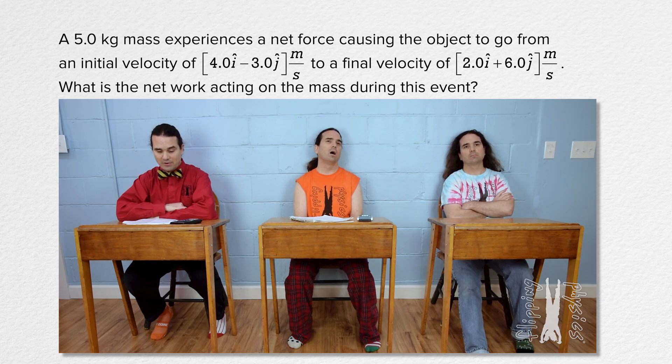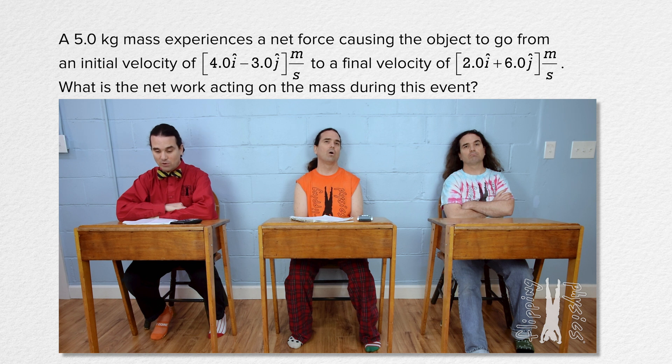Flippin' physics. A 5.0 kilogram mass experiences a net force causing the object to go from an initial velocity of 4.0i minus 3.0j meters per second to a final velocity of 2.0i plus 6.0j meters per second.